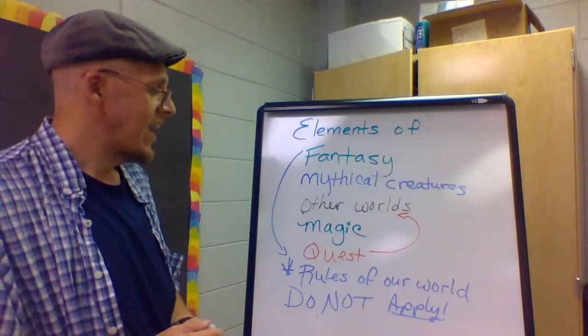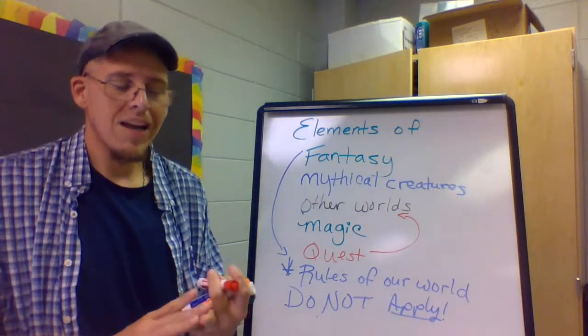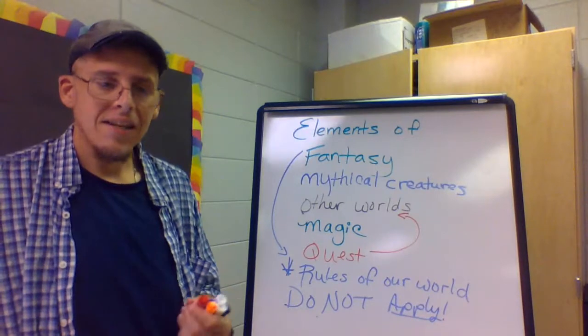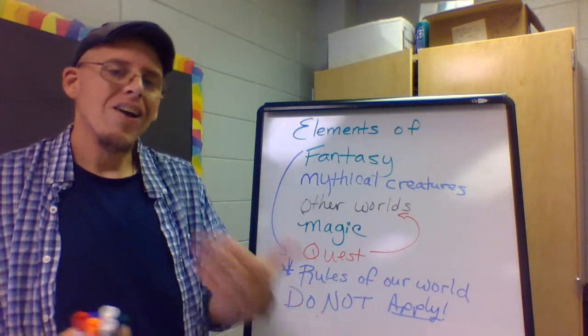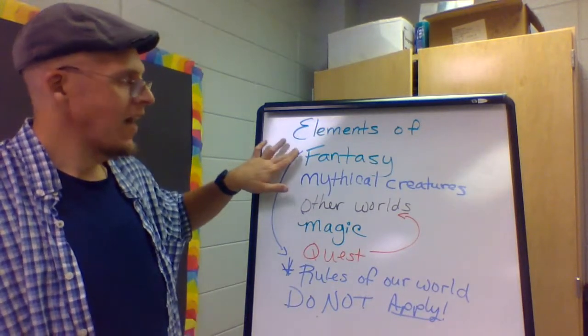We're going to see that as we read The Lion, the Witch, and the Wardrobe. You'll also see that we're going to read a selection from Alice in Wonderland. And then as you're reading your own fantasy novel, think about which things take place in that novel that couldn't happen in our world. That lets you know you're in a fantasy novel.